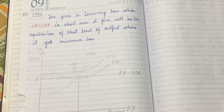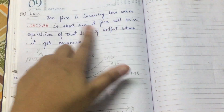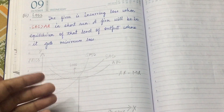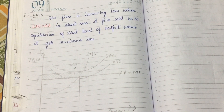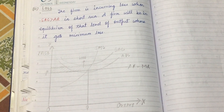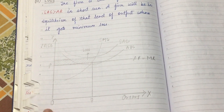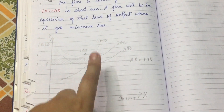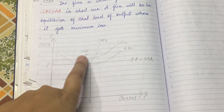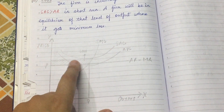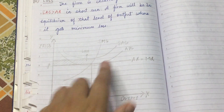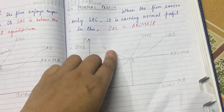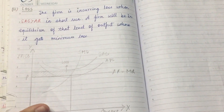A firm incurs a loss when SAC is more than average revenue. The firm will be in equilibrium at the level of output where it gets maximum — meaning minimum — loss. On the diagram, the price line P equals AR equals MR is shown straight. The SMC intersects at the equilibrium point, and the SAC curve is above the price line. The AVC is also drawn below SAC. The shaded region between SAC and the price line represents the loss.